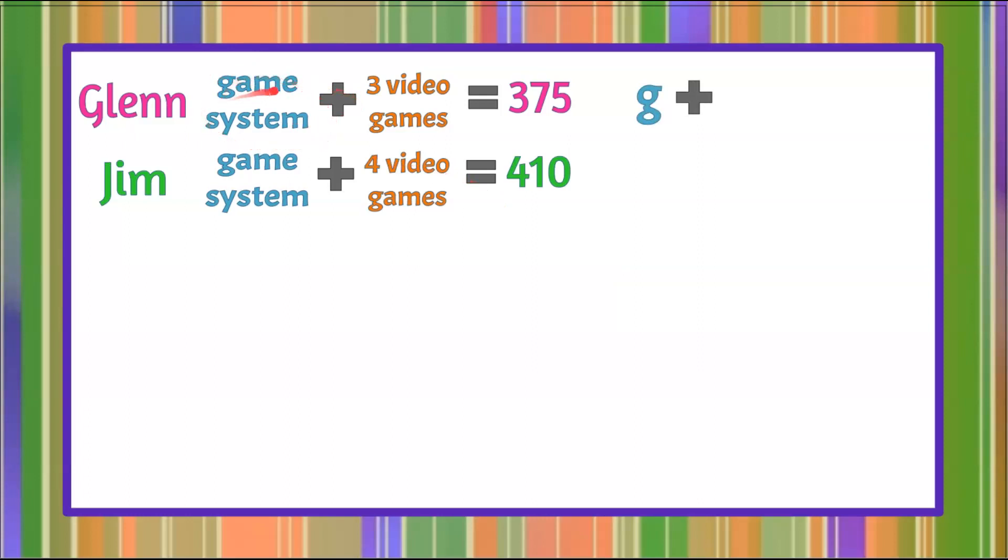We're going to start with the game system, and we're going to let the variable g represent the cost for one game system. Now we need a variable to represent the cost of one video game. We'll use V. So three times V right here represents the total cost that Glenn spent for three video games. V is that unknown cost for one video game, and then he spent a total of $375. So a game system plus three videos equals $375.